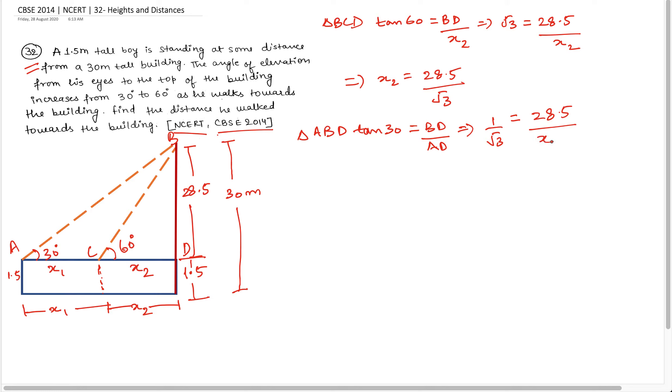x1 की value मुझे निकालनी है, plus x2 की value मुझे पता है. x2 की value मुझे पता है, तो मैं इसे अभी तो x2 ही लिख देता हूँ. बाद में यह value मैं replace करूँगा यहां पर. तो यह आ गया. आप यहां पर देखे, इधर से मुझे पता चल जाता है, x1 plus x2 is equal to 28.5 into root 3.